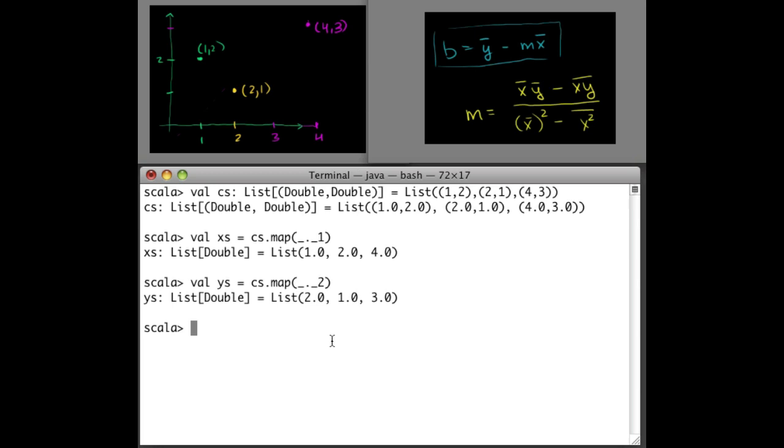And then we also need to do things like multiply the x times y for each coordinate, and then take the mean of that. So let's do val xys, take all the coordinates, visit each one, and for each one, which we'll call c - this is a different syntax here for the map - we want to take the result of multiplying the first tuple element by the second one. This is x, this is y, multiply them together. Now we have a list of 2, 2, 12. So 1 times 2 is 2, 2 times 1 is 2, 4 times 3 is 12.